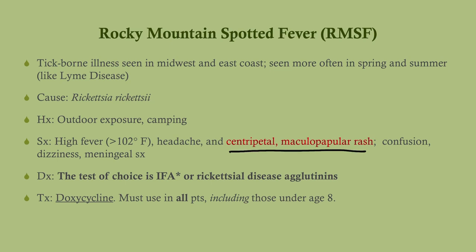The rash is classically described as centripetal — different from Lyme disease, which causes erythema migrans (the target rash). In RMSF you have a maculopapular rash that starts on the hands and feet and spreads to the trunk. The best test is IFA, but on CCS the option to use is rickettsial disease agglutinins. Treatment is doxycycline.